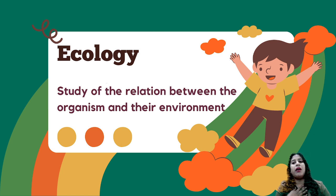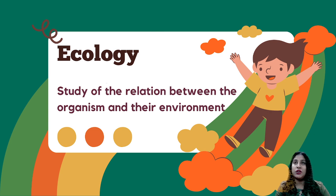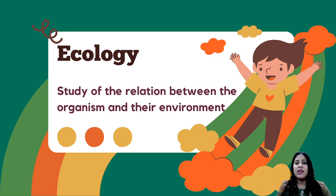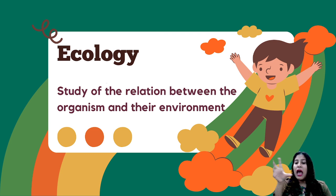For example, what will my environment demand of me? What will I respond to the heat? What will I respond to the cold? What will I respond to the rain? What will I do to deal with all these environmental circumstances? Any animal, any insect, any bird, any plant can be different. So it is the relation between any organism and their response to the environment — it is called ecology.